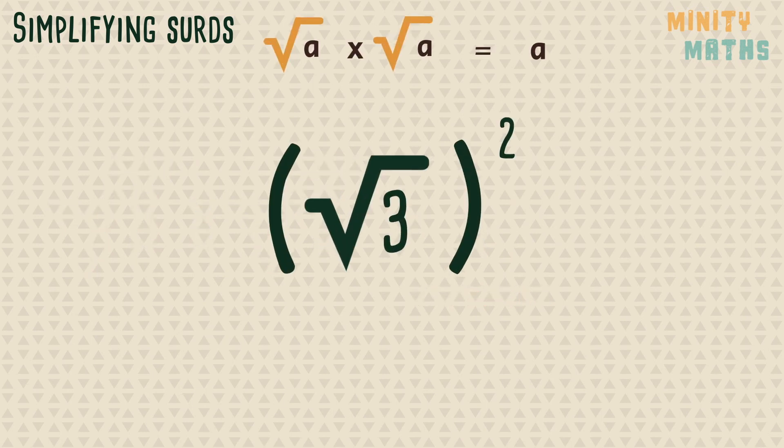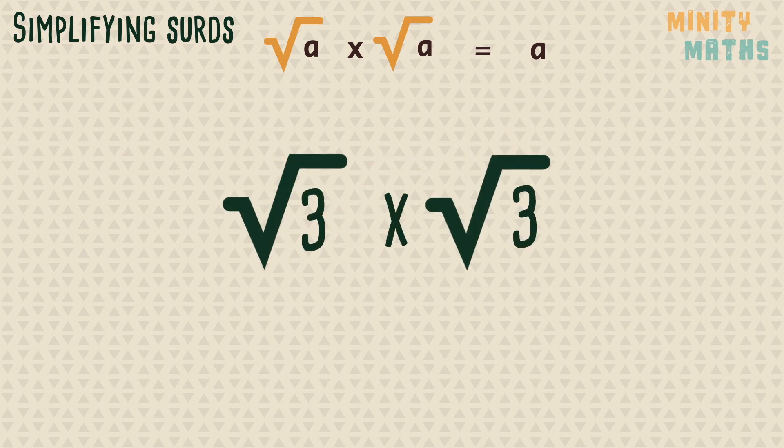In this example, we are also squaring the square root of 3, that is, multiplying it by itself.